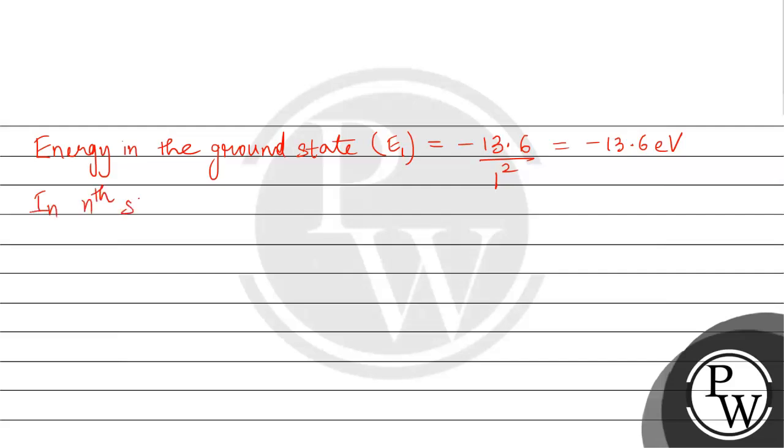In the nth state, energy will be E1 plus 12.5. So this will be minus 13.6 plus 12.5, which equals minus 1.1 electron volt.